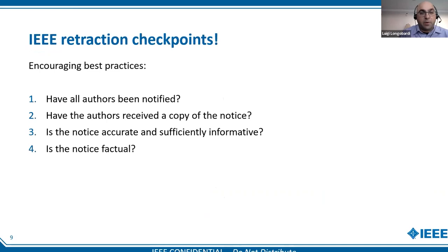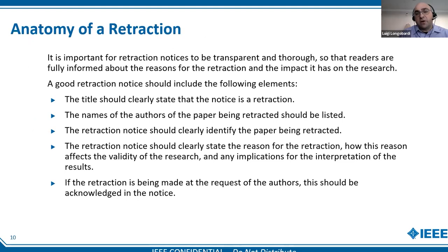It is also my team's job to encourage best practices. We have several checkpoints during the process to make sure that authors have been notified, that if a retraction has been approved the authors receive a copy of the notice, and that the notice is factual, accurate, and sufficiently informative. We make sure that we keep a very good record because there are legal implications following a retraction. It is important for a retraction notice to be transparent so that readers are fully informed about the reasons for the retraction and the impact it has on the research. We make sure that retracted papers are clearly identified as retracted, that the title and authors of the original papers are identified on the retraction notice, and we state the reason for the retraction and how it affects the validity and interpretation of the research results.